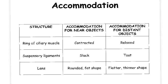The shape of the lens is controlled by the ciliary muscle and the suspensory ligaments. When you are looking at a nearby object, the ring of ciliary muscle contracts and the suspensory ligaments slacken. This gives the lens a rounded fat shape.